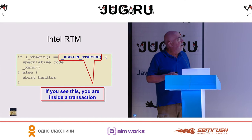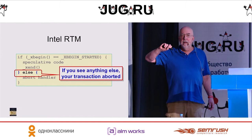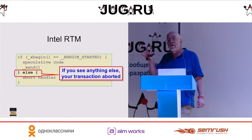If xbegin returns with this code, you are executing a transaction. If it returns with anything else, you tried a transaction and it aborted. What happens is the first time you call it, you execute the code. If that fails, the hardware resets the memory and it resets your program counter, but changes the return code.